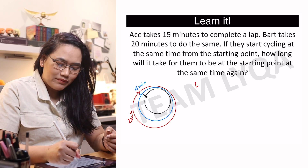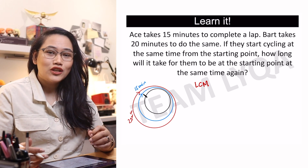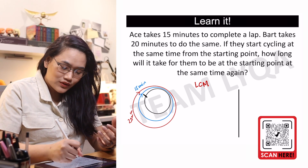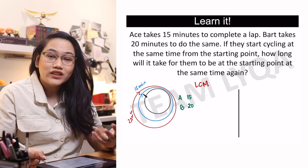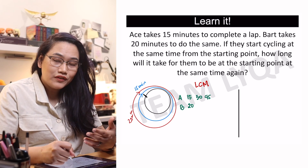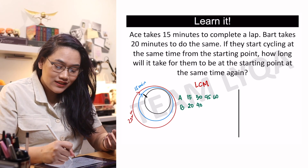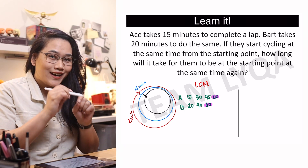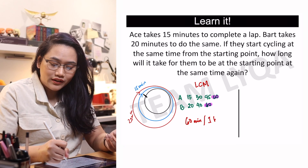So how do we find the LCM or least common multiple? There are a number of ways and I'll show you a few options. The first method is just listing the multiples. Ace returns to the starting line at multiples of 15, and Bart at multiples of 20. So we list 15, 30, 45, 60 for Ace, and 20, 40, 60 for Bart. Because there's a matching number — 60 and 60 — you can say they will meet right at the starting point after 60 minutes. So the answer is 60 minutes, or 1 hour, depending on what's in the options.